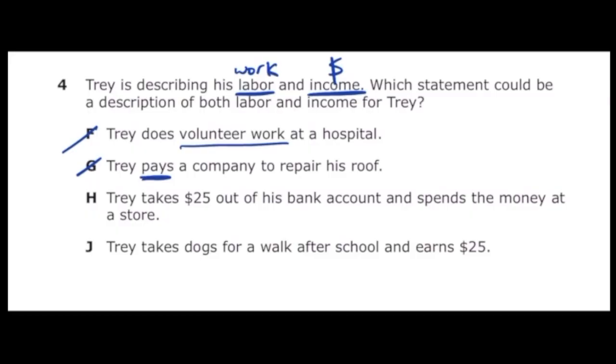Letter H says Trey takes $25 out of his bank account and spends the money at a store. Again he's spending his own money, so that's not income. Letter H is not correct. Letter J says Trey takes dogs for a walk after school and earns $25. He's walking the dogs, that's the work, and he's earning income of $25. So the correct answer is letter J.